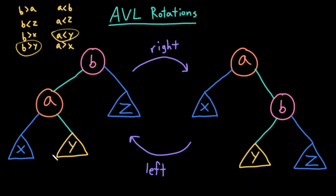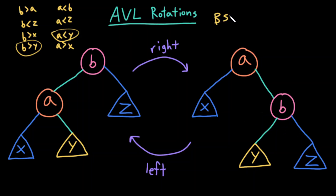So that was the description going from the original tree, doing a right AVL rotation, and ending up at the new tree. Likewise, I could start at the new tree, do a left AVL rotation, and end up back at the original tree. The key thing to remember is just these pointer changes that happen: X and Z remain unchanged, remaining the left child of A and the right child of B respectively. And importantly, the BST properties are maintained.